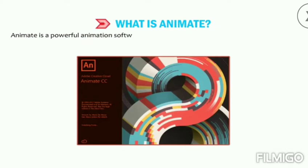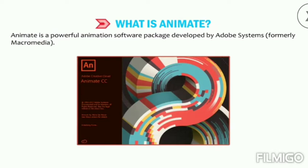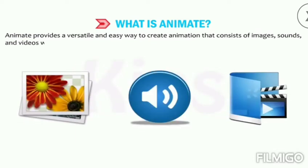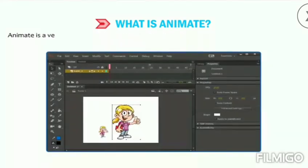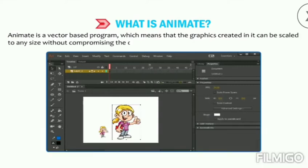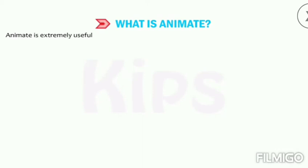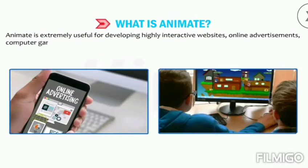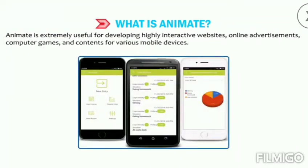Animate is a powerful animation software package developed by Adobe Systems, formerly Macromedia. Animate provides a versatile and easy way to create animation that consists of images, sounds, and videos with various effects. Animate is a vector-based program, which means the graphics created in it can be scaled to any size without compromising quality.